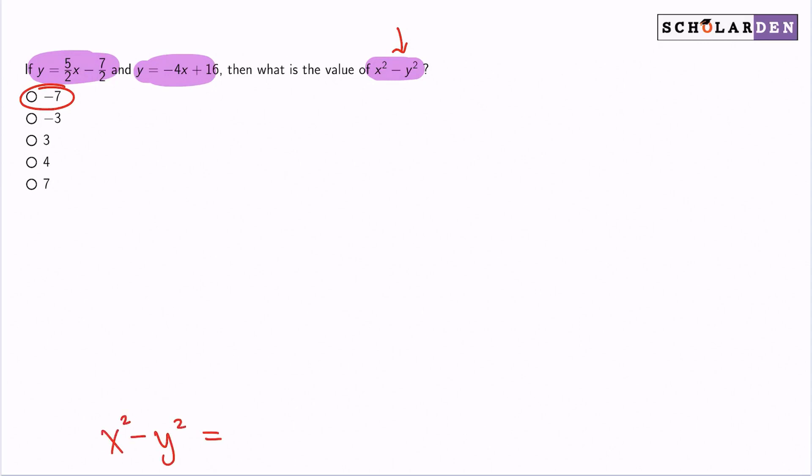Now, in order to figure out what that is, it seems like we're going to have to figure out what x and y are. And then we can substitute those values for this expression and figure out its result, which is exactly what I'm going to do. So the only question is, how am I going to get there? I easily see here that we have two equations and both equations use x and y. So with that said, this is a system of equations and we can just solve as normal.